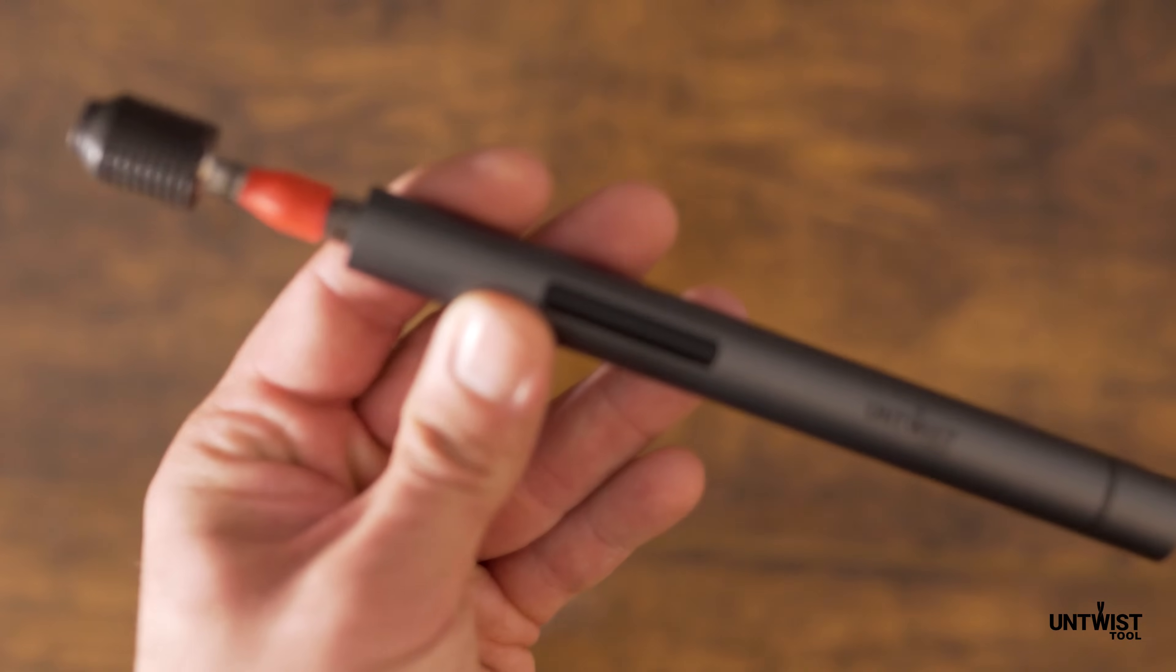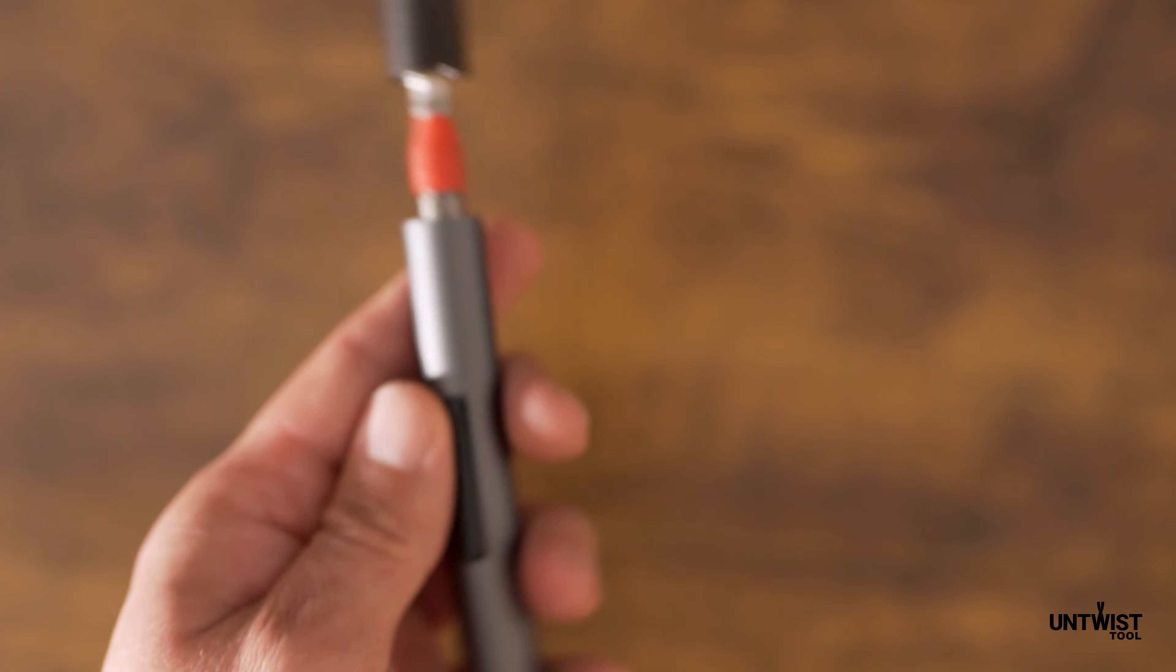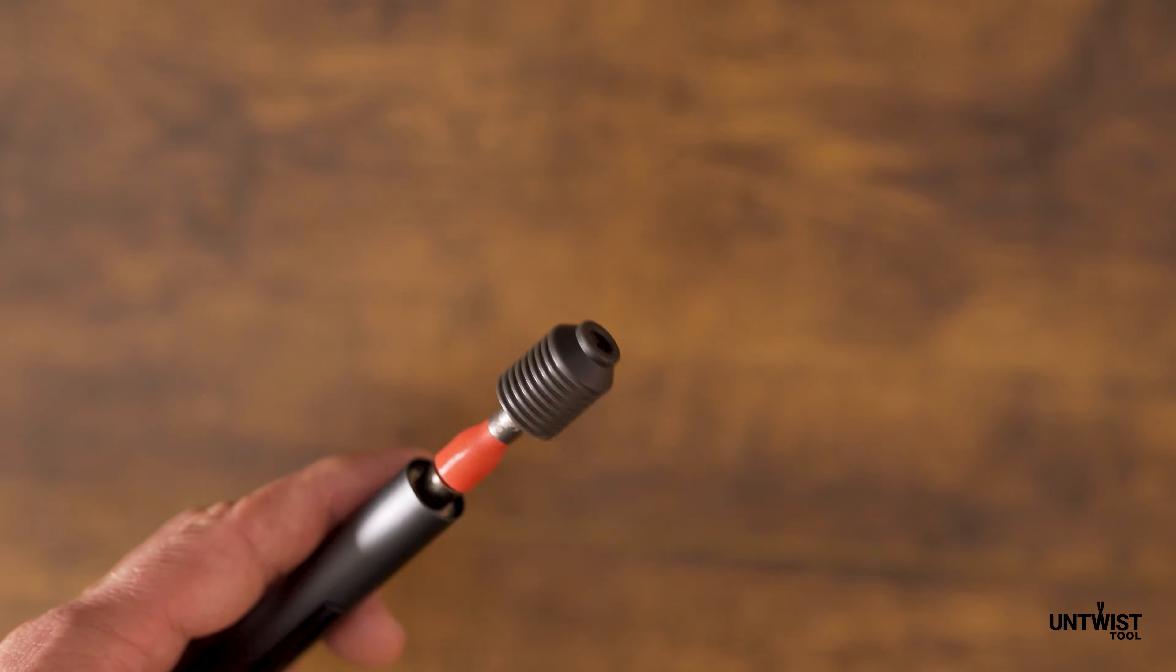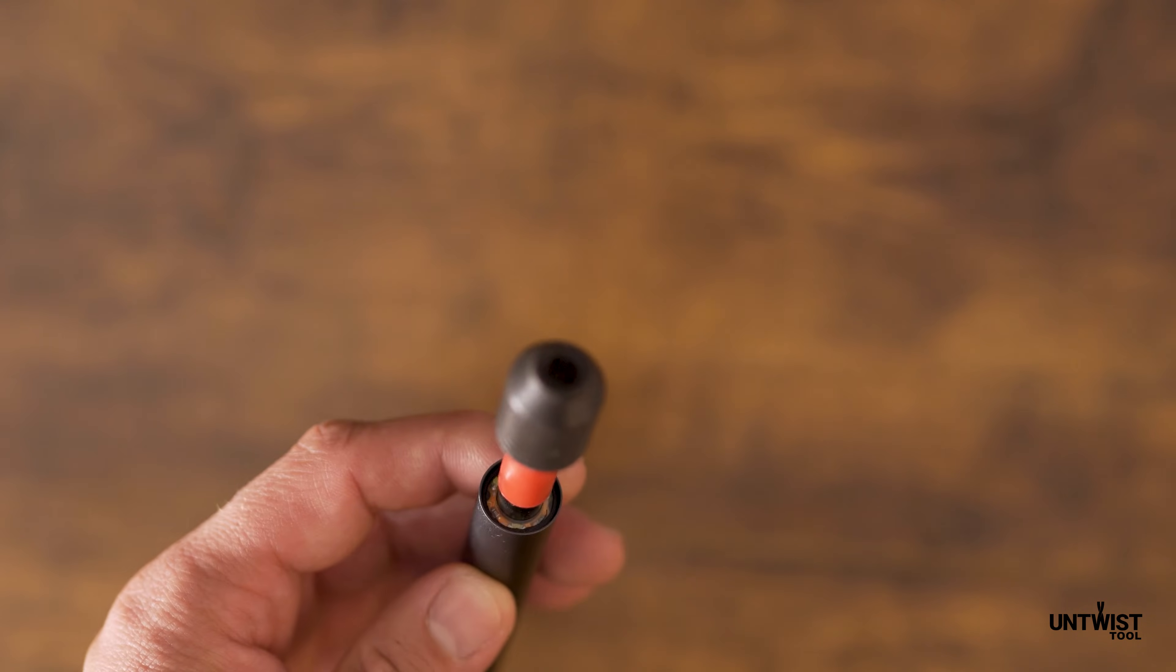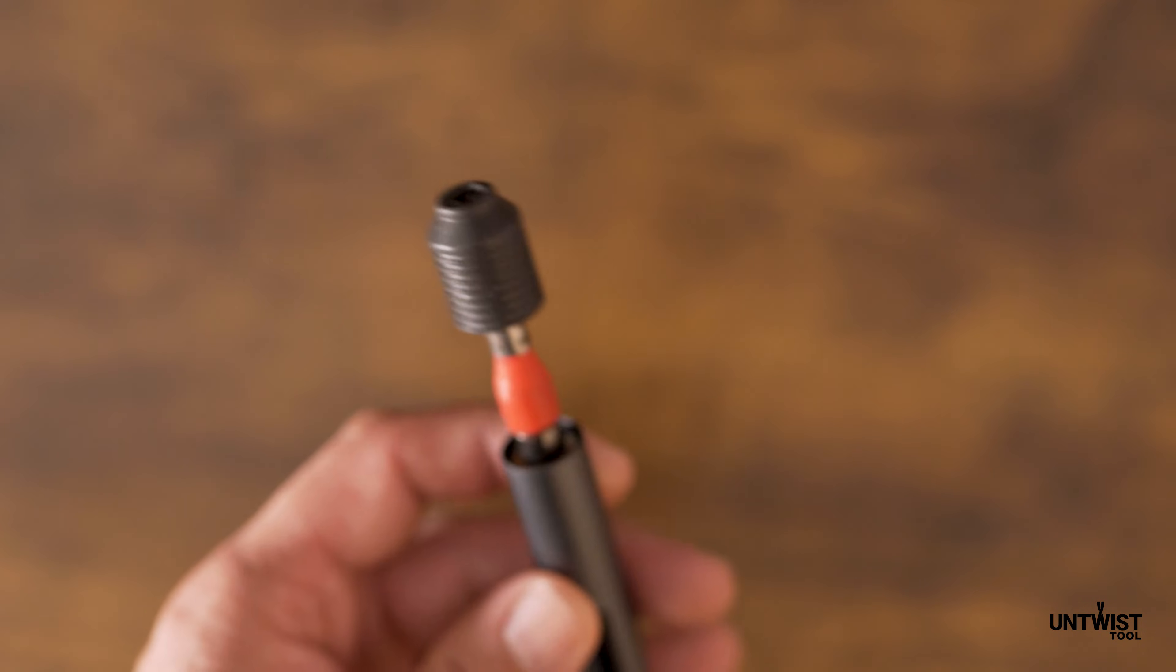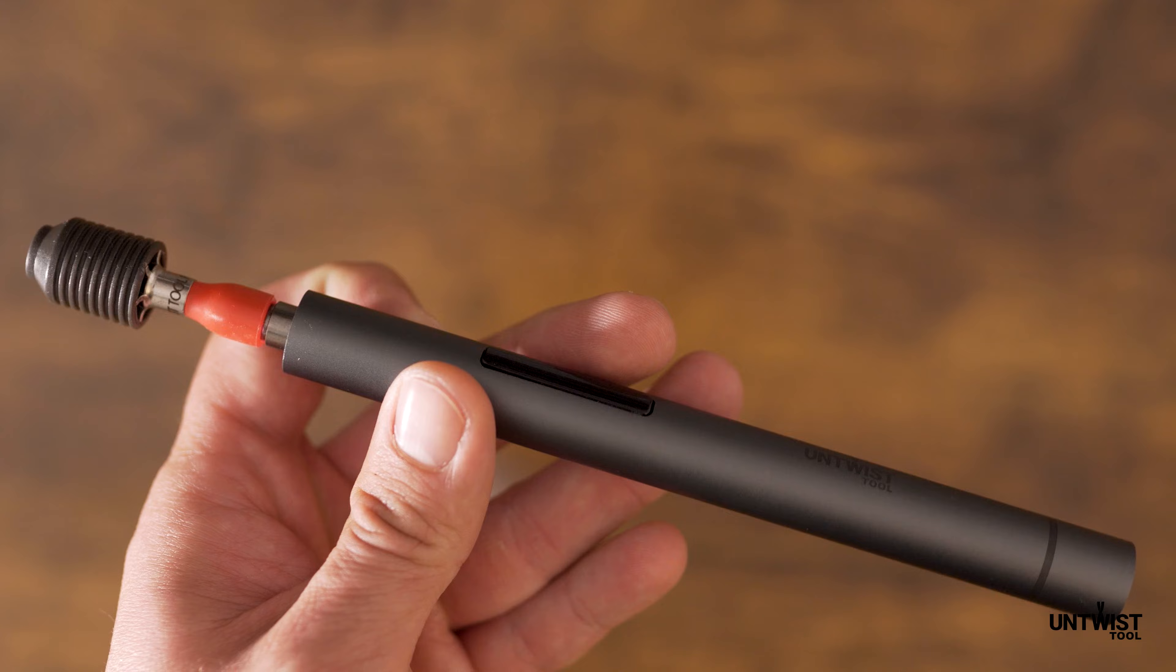If the Cat6 cable has a thicker jacket around each conductor, Pro 67 comes to the rescue. Besides Cat6, Pro 67 is designed to easily untwist Cat6a and Cat7 network cables.